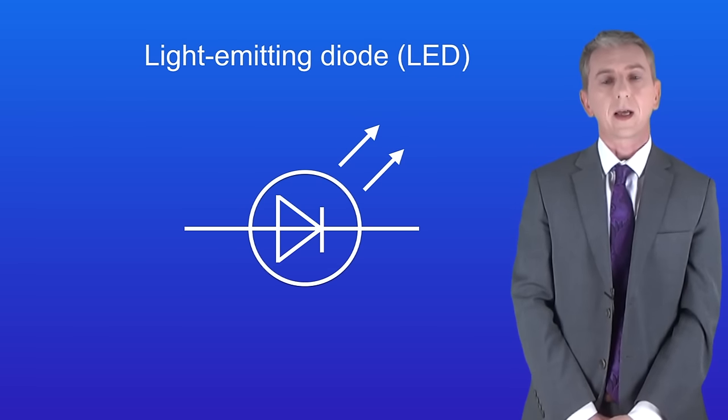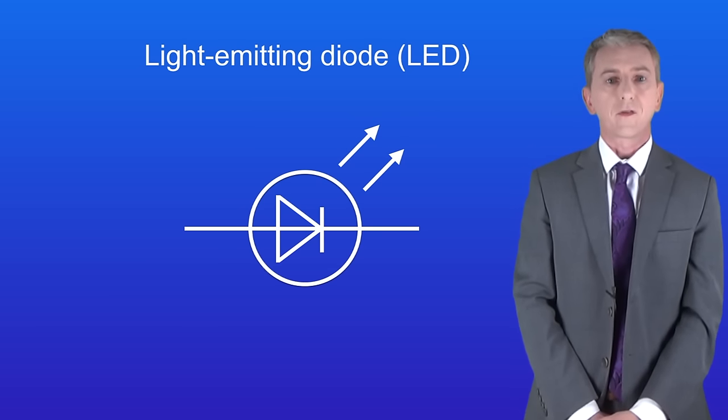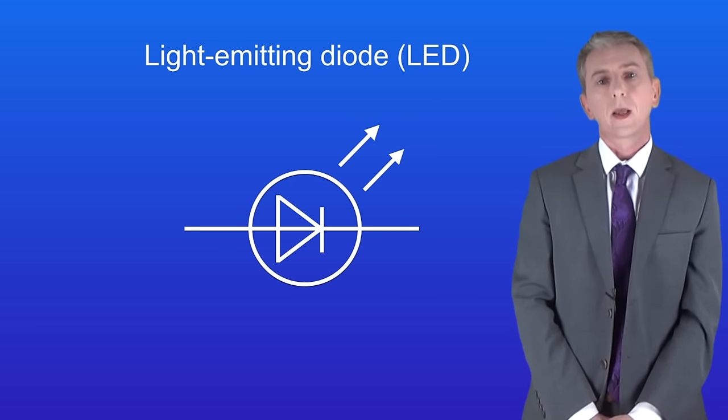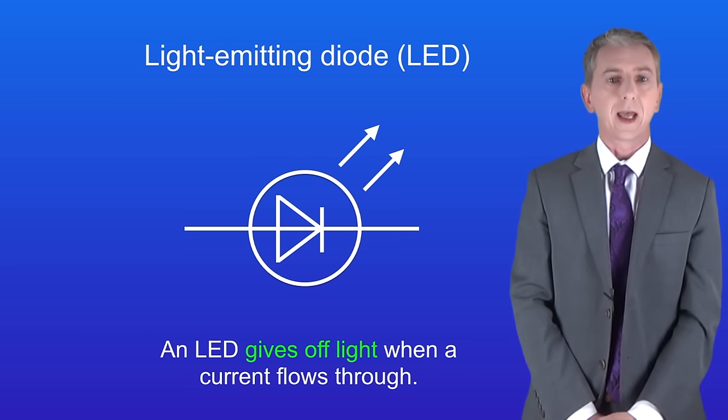Now, an LED is just like a normal diode. It only allows current to flow in the forward direction. However, unlike a normal diode, an LED gives off light when a current flows through.